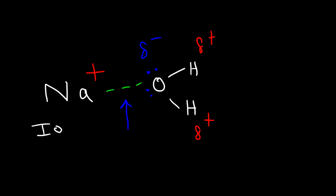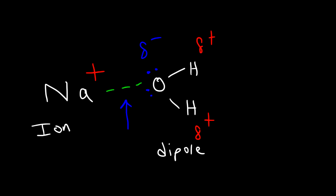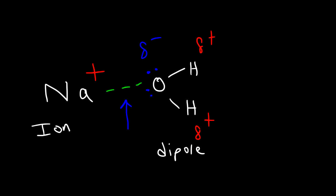Sodium is an ion and water is a dipole. The reason why water is a dipole is because it's a polar molecule. One part of the molecule has a partial negative charge and the other part has a partial positive charge. So there are two poles of different charges, and so it's a dipole — 'di' means two. And so this is an ion dipole interaction; it's the interaction between an ion and a dipole.